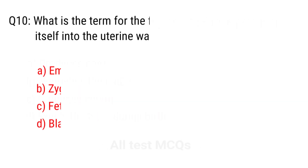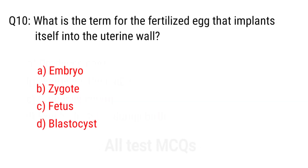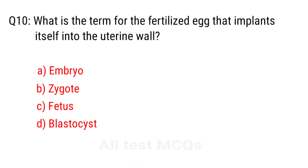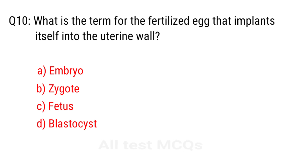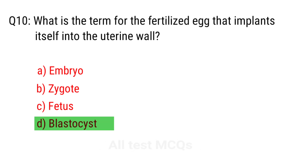Q10. What is the term for the fertilized egg that implants itself into the uterine wall? The right answer is option D: Blastocyst.